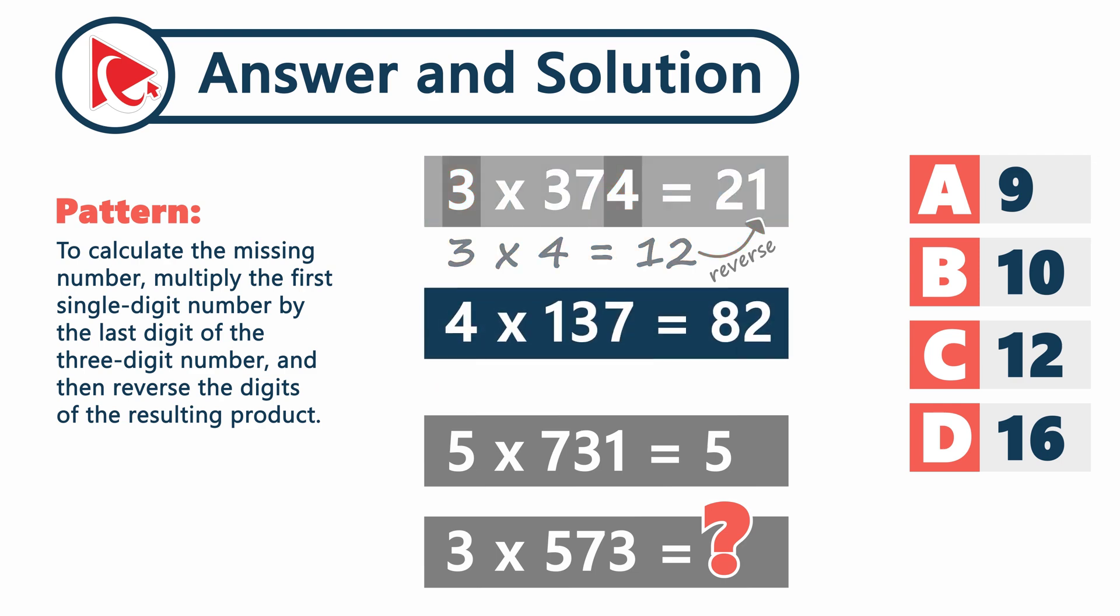Let's look at other expressions to confirm the pattern. 4 multiplied by 137 equals 4 multiplied by 7 and equals 28. 28 reversed is 82.